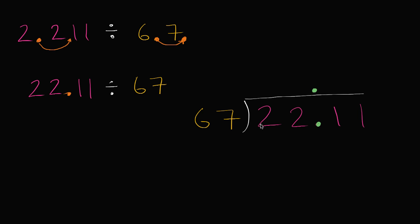But let's do this. So 67 goes into 2 zero times. So let's move on. 67 goes into 22 zero times. 67 goes into 221. So let's think about that a little bit.